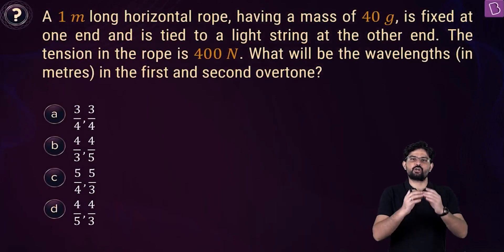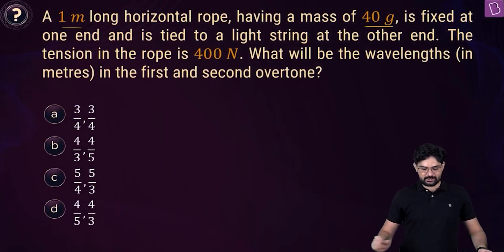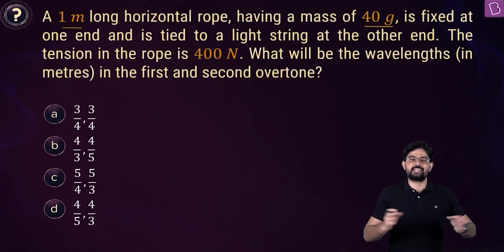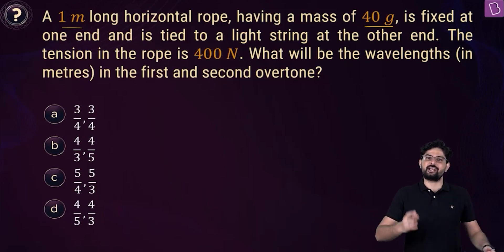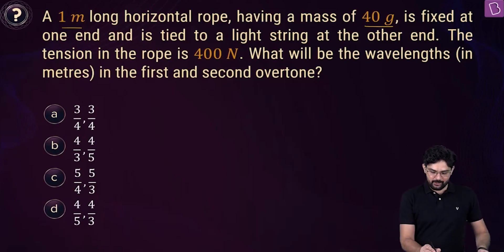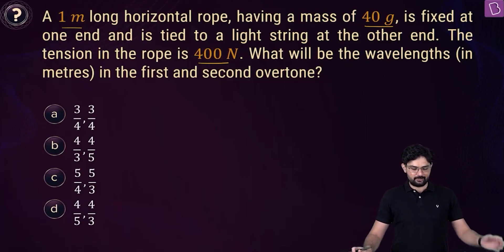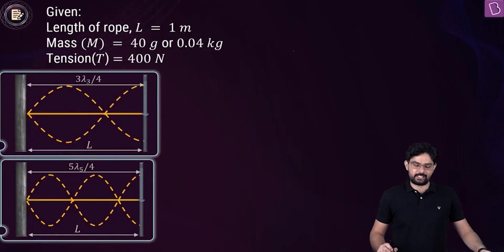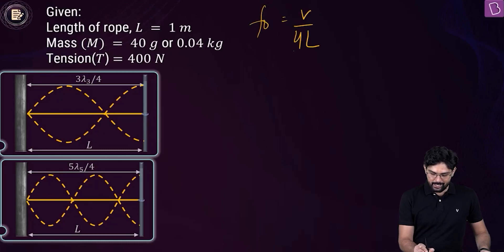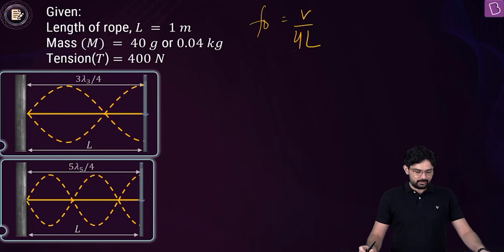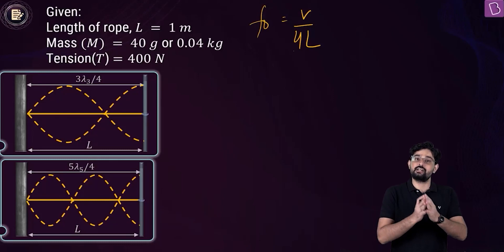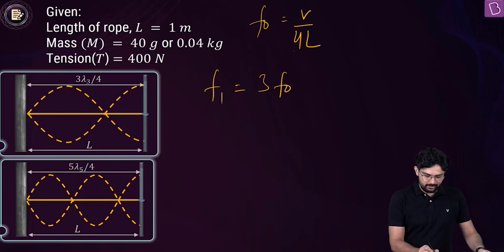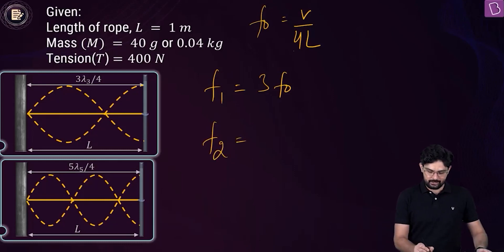Now according to this problem, there is a horizontal rope of length 1 meter and mass 40 grams. This rope is fixed at one end and tied to a light string at the other end — so this is the case of a string fixed at one end and free at the other. The tension is 400 N and we have to find the wavelengths in the first and second overtone. The fundamental frequency is V/(4L). The first overtone is the third harmonic at frequency 3F₀, and the second overtone or fifth harmonic is 5F₀.